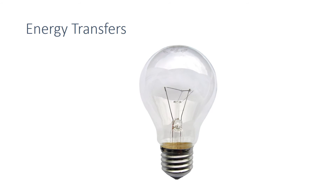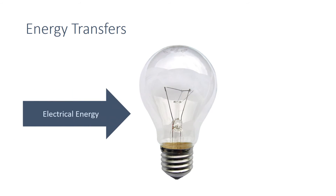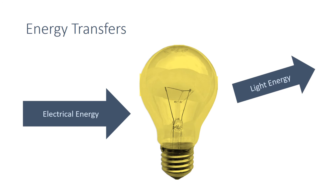For example, this light bulb receives energy in the form of electricity, and when it's turned on, the electrical energy is transferred to the environment as useful light energy or waste heat energy.